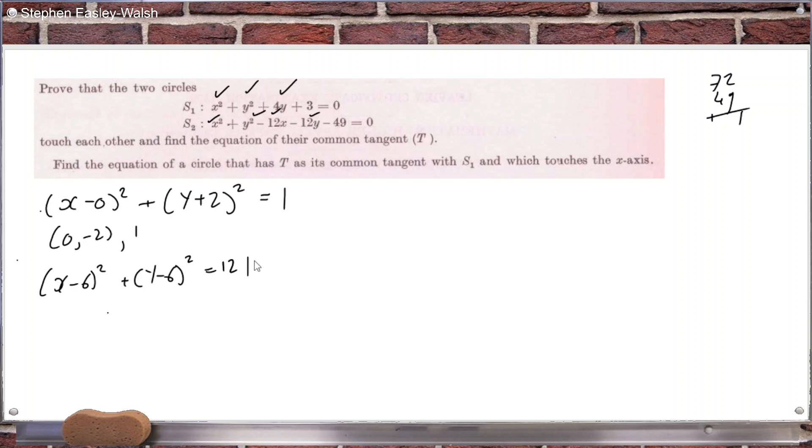121 equals 121 then. Minus 49 minus 72 is minus 121, which is 11 squared.